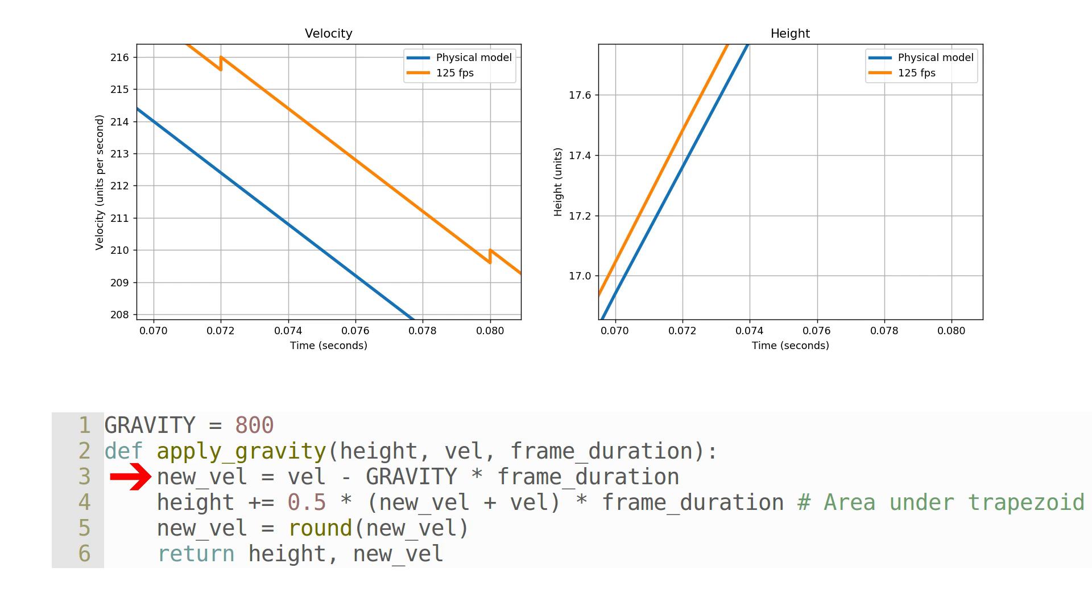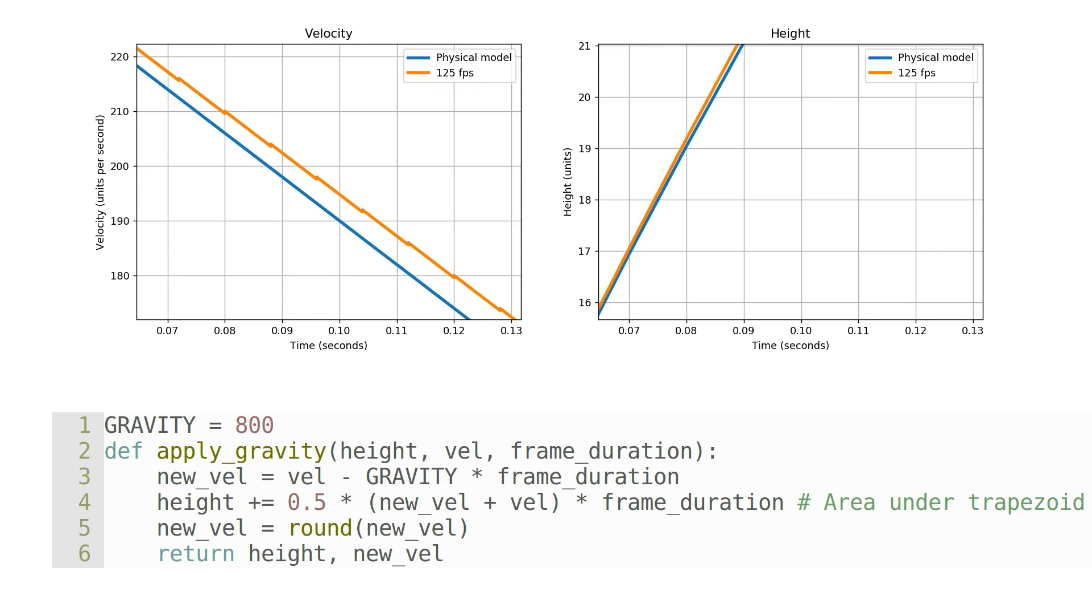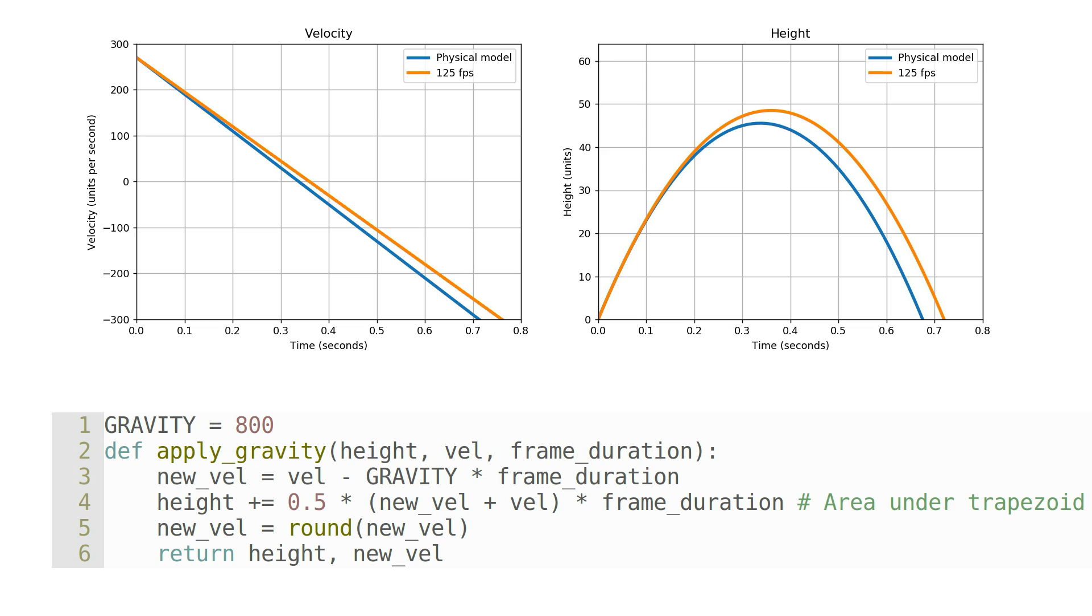then the updated velocity will have a fractional part greater than 0.5, and so it will be rounded up on line 5. This gives a higher velocity, and therefore a slightly higher height on successive iterations. Accumulated over all the frames of the jump, this difference results in a large increase in height.